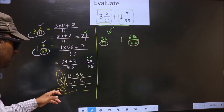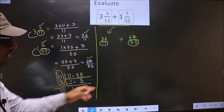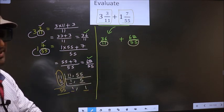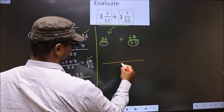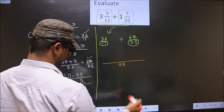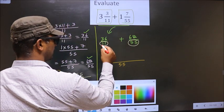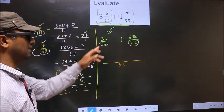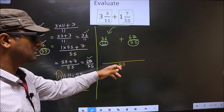Now, whatever LCM we got, we should write here in this way: 55. Next, here the denominator is 11 and here it is 55.